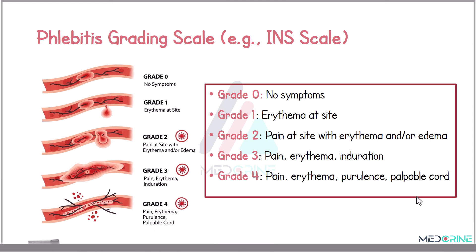To assess the severity of phlebitis, we use the INS grading scale. Grade 0 presents with no symptoms; grade 1 represents erythema at the site; grade 2 presents with pain with erythema or edema; grade 3 presents with pain, erythema, and induration; and grade 4 presents with pain, erythema, purulence, and a palpable cord.